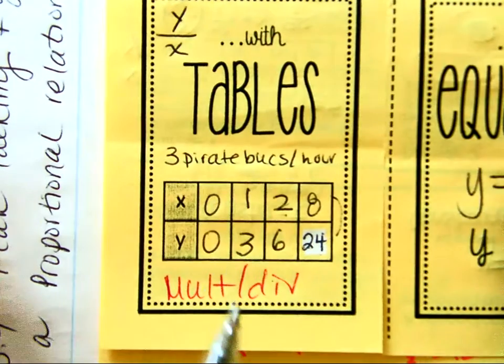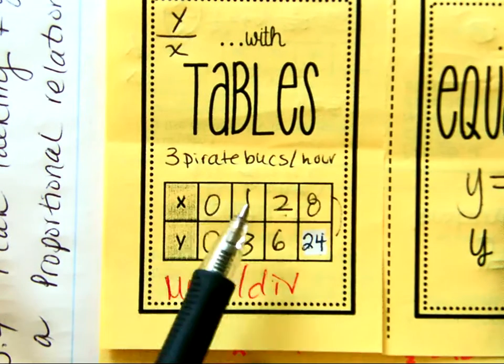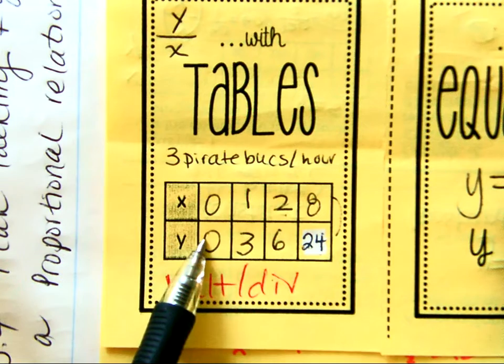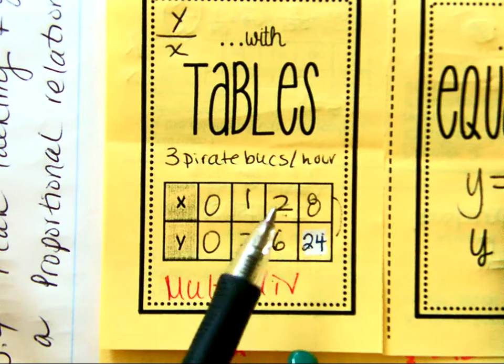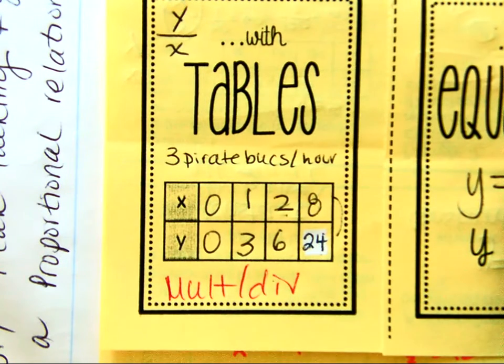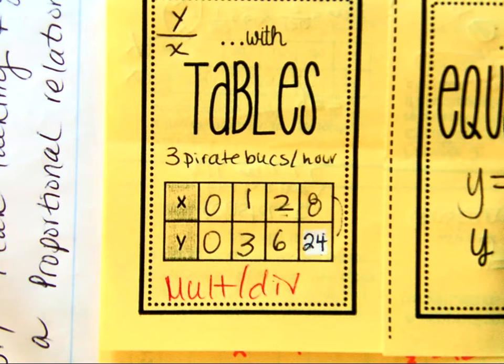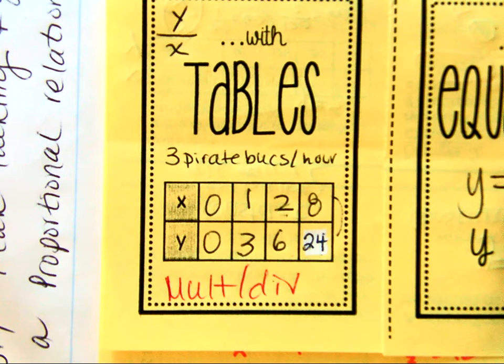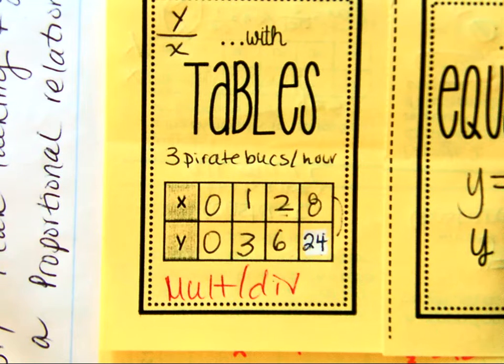So watch. I said, hey, if you get three pirate bucks for every hour, then if you don't go to any hours, you don't get any pirate bucks. One hour, you would get three. Two hours, you'd get six. Eight hours, you'd have 24. Do you remember me doing this? So if I put a table in front of you like I'm going to today, here's the cool part about it. No more yes or no. Today, every single table, equation, graph I give you is already going to be a yes. I'm telling you right off the bat.